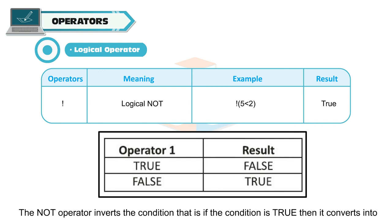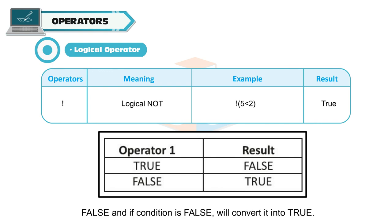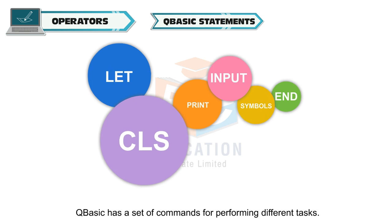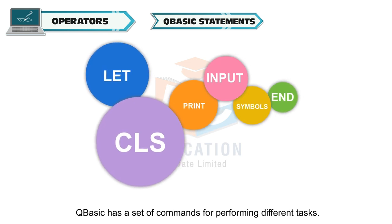The NOT Operator: The NOT Operator inverts the condition. That is, If the condition is true then it converts into false and if the condition is false it will convert it to true. It operates only on one operand.